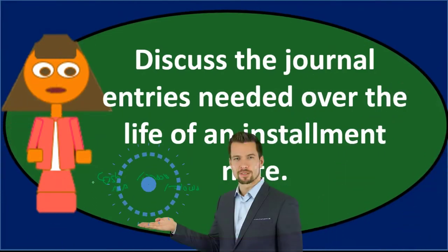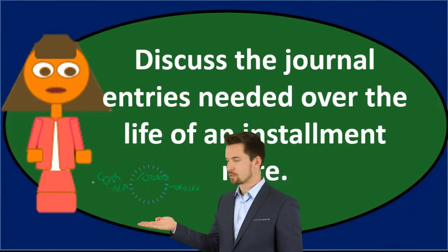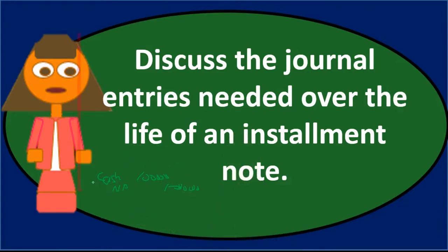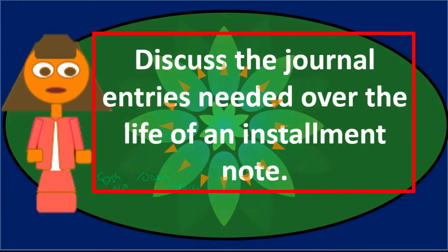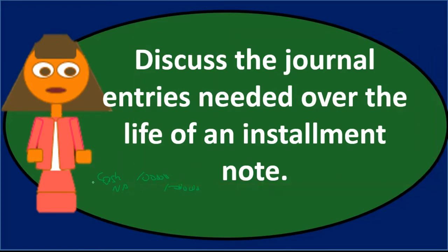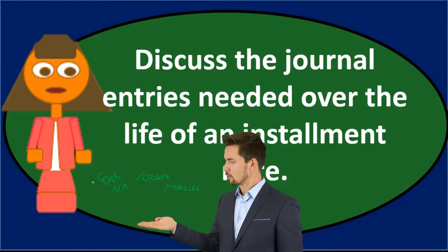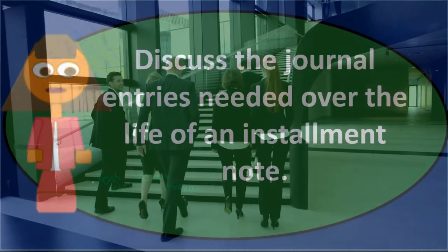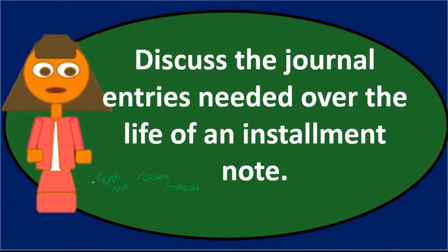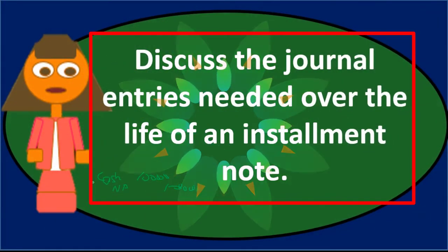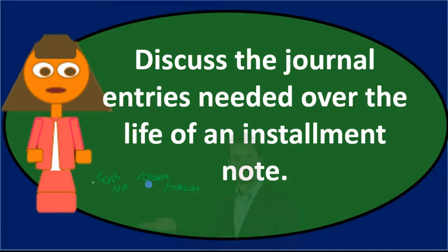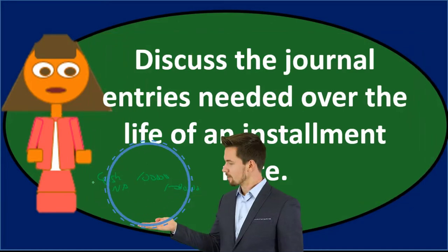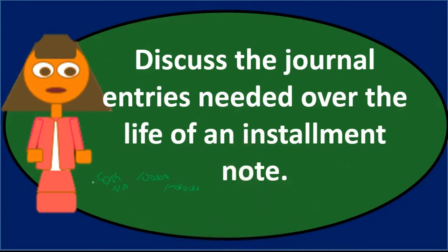Why is there no interest expense when we first record the journal entry? Because no time has passed. We're renting the purchasing power of money — just like we don't owe rent on an office building until time passes. Same here: we don't owe rent on the purchasing power of this money until time passes, so we don't record interest.